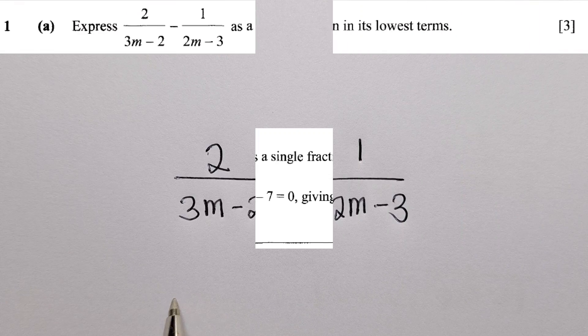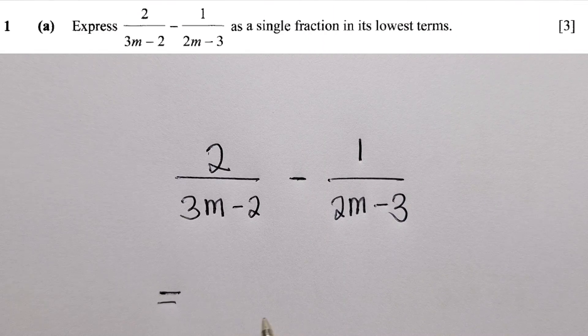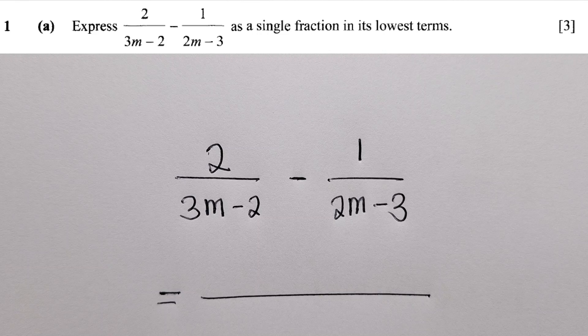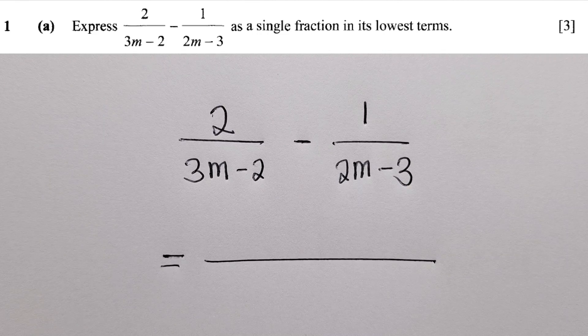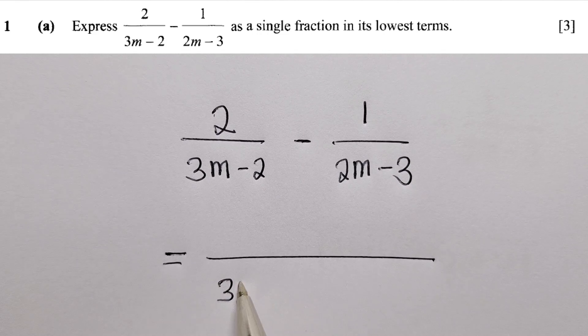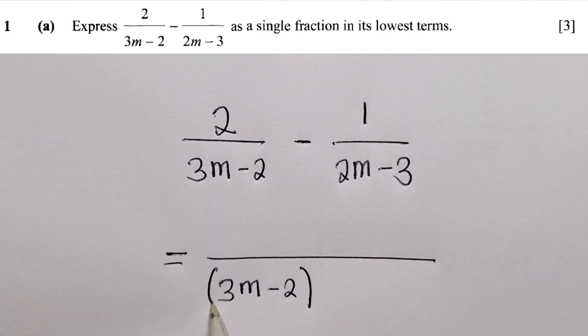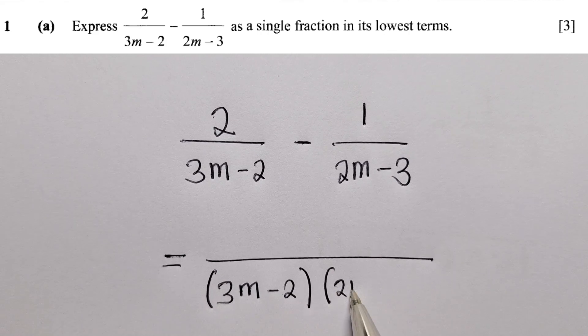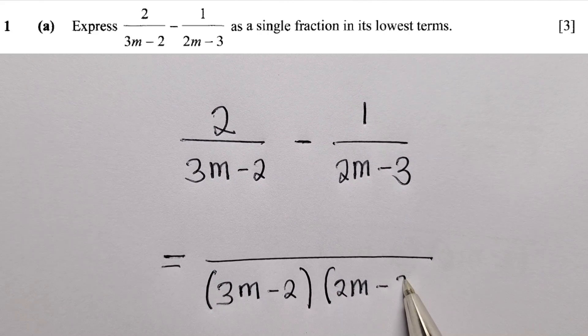For question 1, we find the lowest common denominator, which is 3m minus 2, and here it's 2m minus 3.